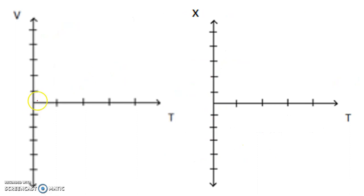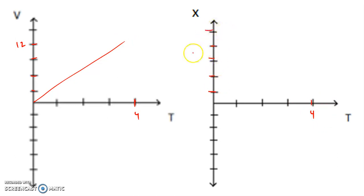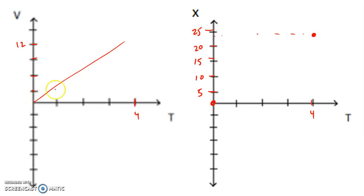To graph this, after four seconds I've moved 24 meters, so I plot that point on my position graph starting from the origin. Notice how my velocity is increasing, so the slope of the position graph also needs to be increasing — giving a curved shape that gets steeper over time.